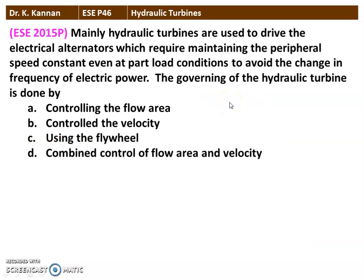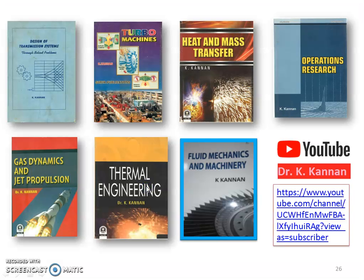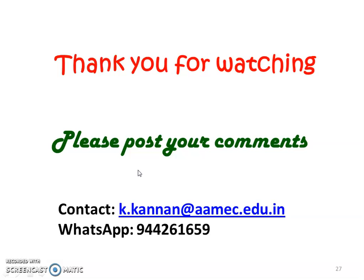The next question is from the 2015 question paper. Hydraulic turbines are used to drive electrical alternators, which require maintaining constant peripheral speed even at part load to avoid changes in electrical power frequency. The governing of the hydraulic turbine is done by controlling the flow area. This is the correct answer. These are the books I have written in mechanical engineering — you can refer to Fluid Mechanics and Machines for theoretical knowledge on hydraulic turbines. Please subscribe to the YouTube channel and use the video lectures for better learning. Thank you for watching, please post your comments, and we will meet again in another video lecture.